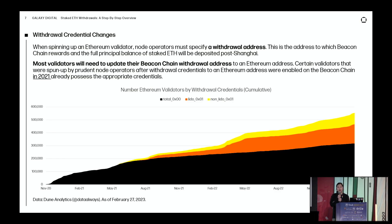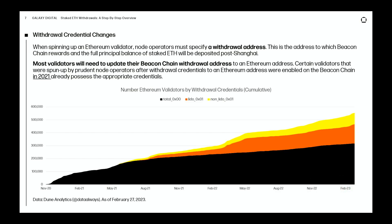One caveat about withdrawal credential changes: I said validators will automatically have partial withdrawals processed, but only for validators that have updated their withdrawal credential. When the beacon chain launched in December 2020, it was assumed withdrawals would go to a beacon chain address. It was only when the understanding developed that Ethereum would merge its existing blockchain with the beacon chain that the withdrawal credential for an Ethereum 1 address got created.